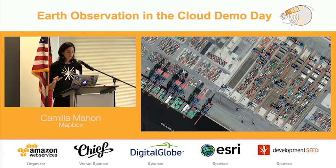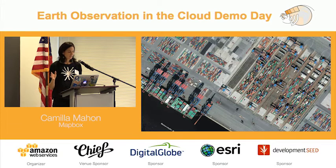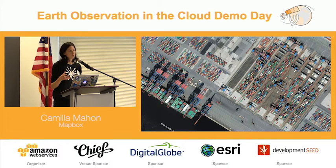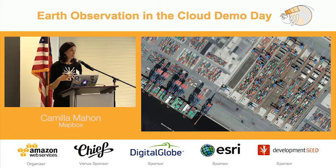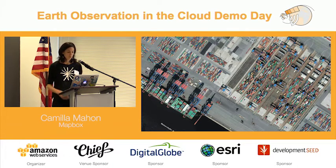At very high resolution we also need to consider that smaller changes are more noticeable. If a single new building goes up from one year to the next and you're looking at a MODIS image, nobody is going to notice. But if you're looking at sub-meter spatial resolution where folks can recognize roads they've traveled and points of interest they've visited, you better bet they're going to notice if a building isn't there. So at this resolution we want to update imagery much more frequently than at the Landsat and MODIS resolutions.